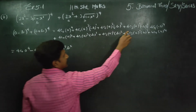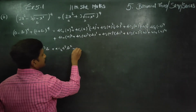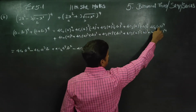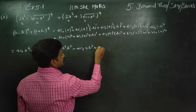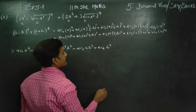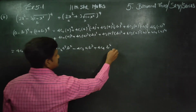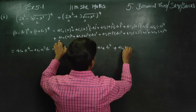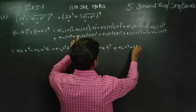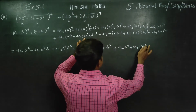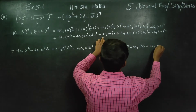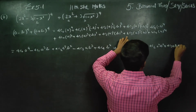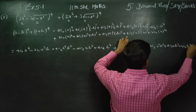When we expand (a minus b)^4, odd-powered terms in b are negative, even-powered terms are positive. Adding both expansions, the odd terms — 4C1 and 4C3 terms — cancel out. We are left with: 4C0 a^4 plus 4C2 a²b² plus 4C4 b^4, all multiplied by 2.